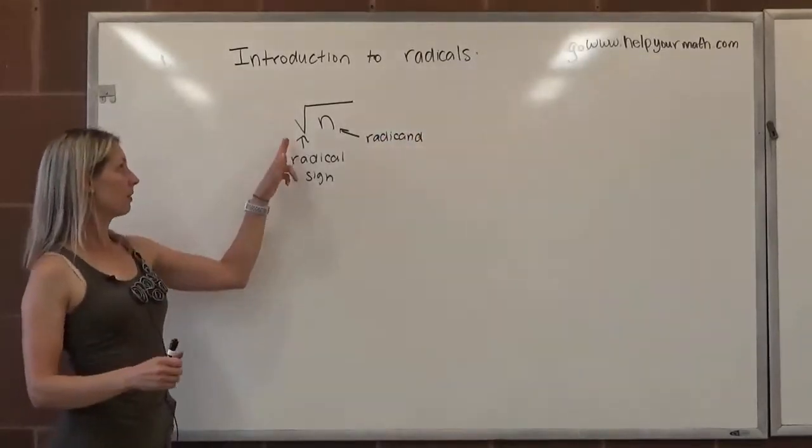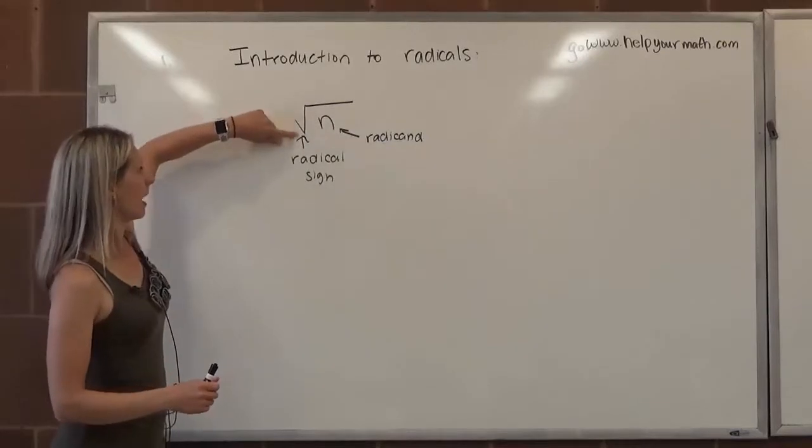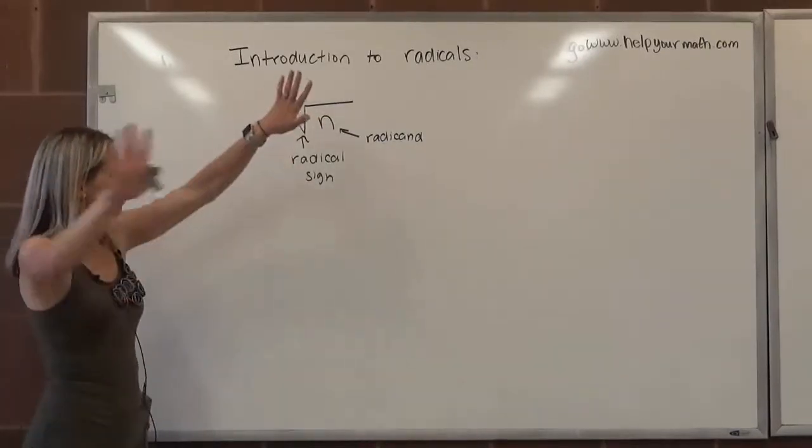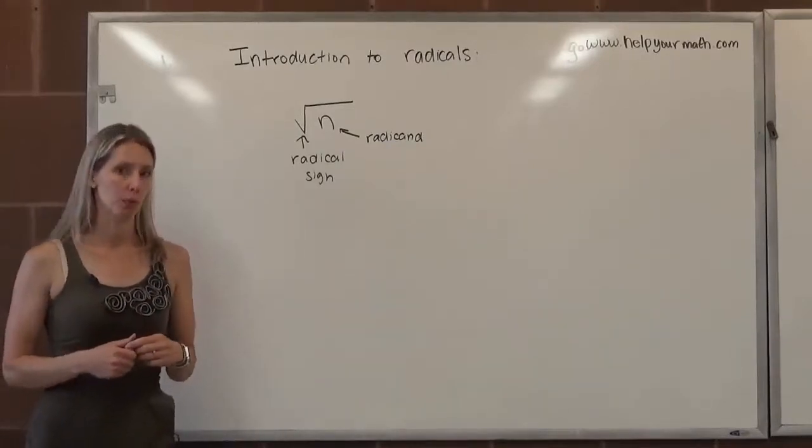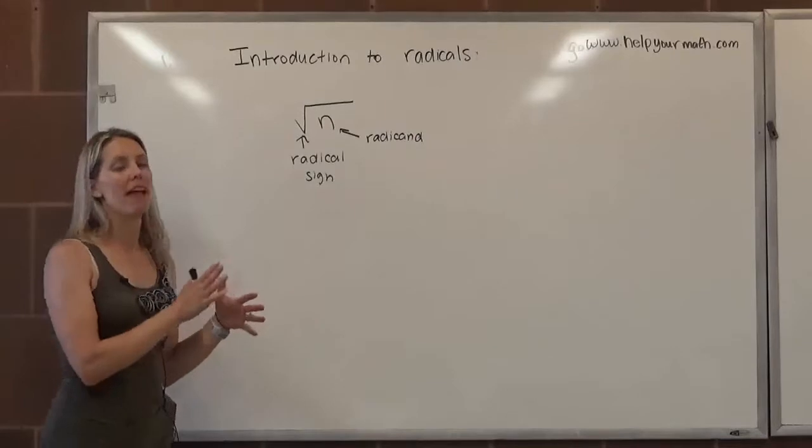If we're given a radical that looks like this, where it's just the radical n and there's no other additional numbers, that is assumed to be the square root of a number. So we'd be talking about the square root of n.